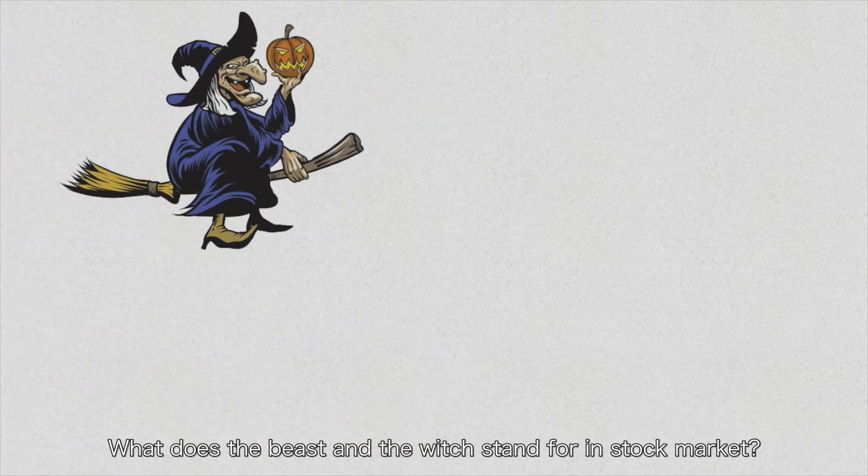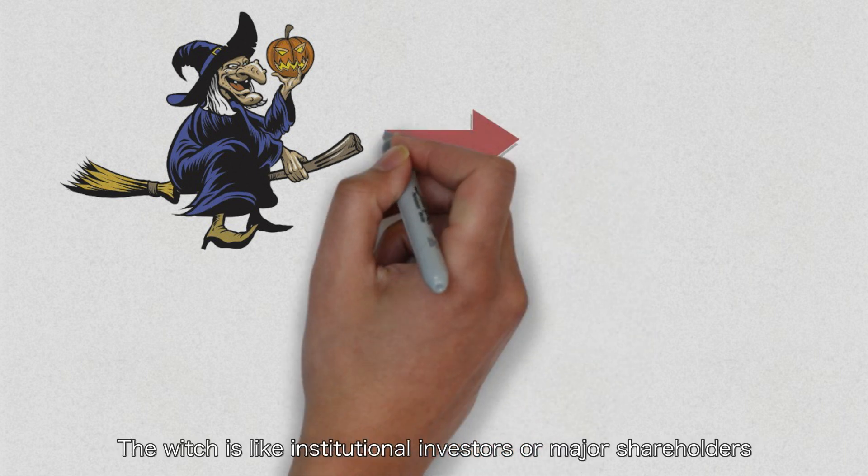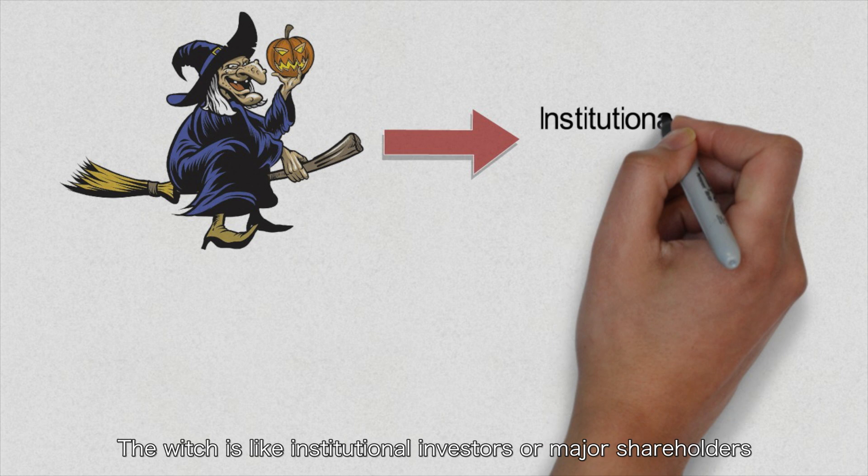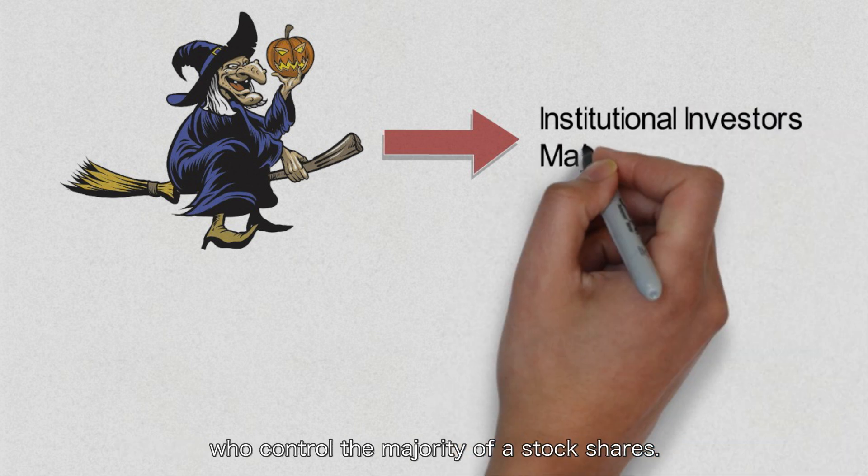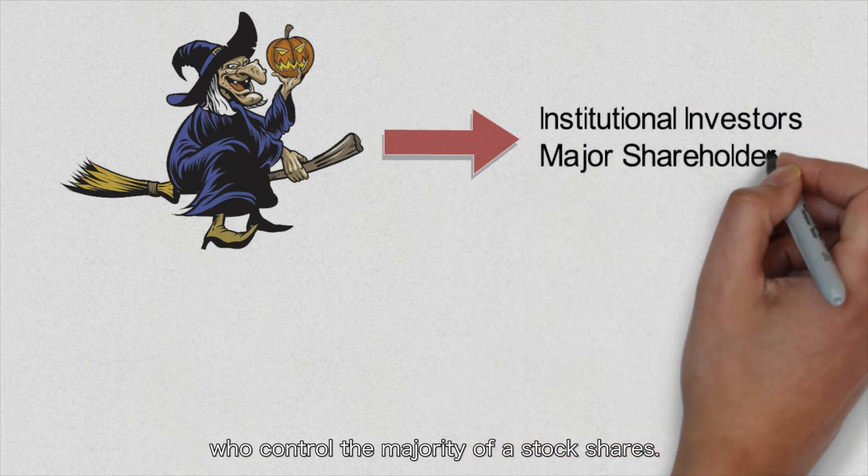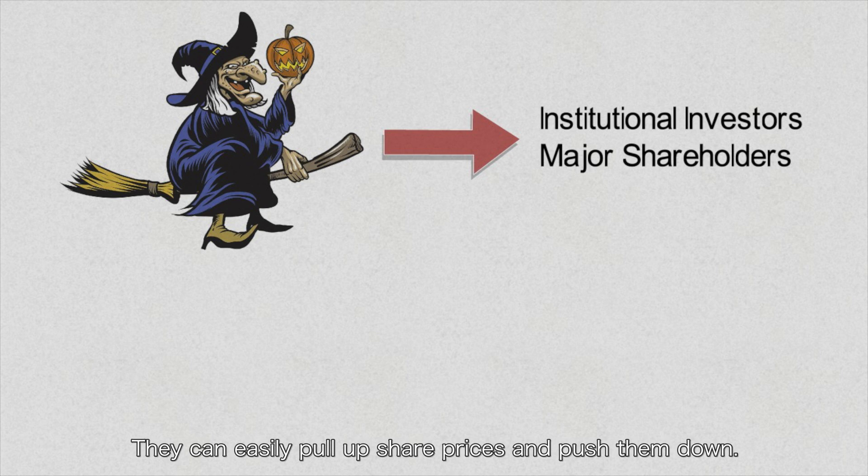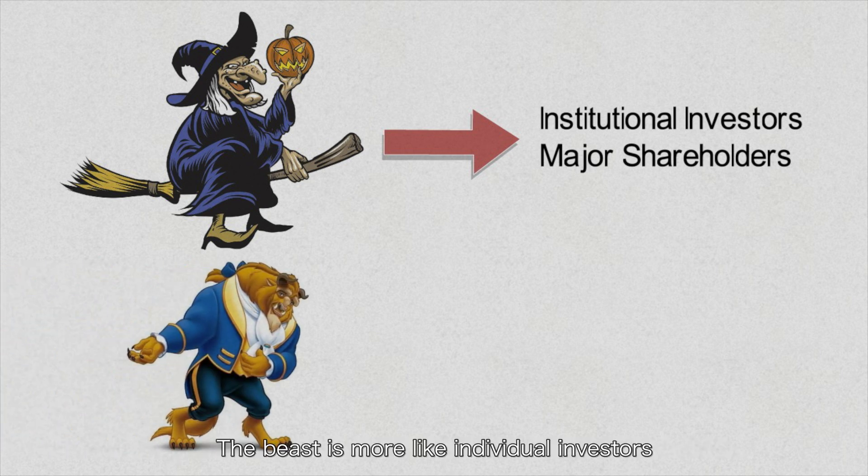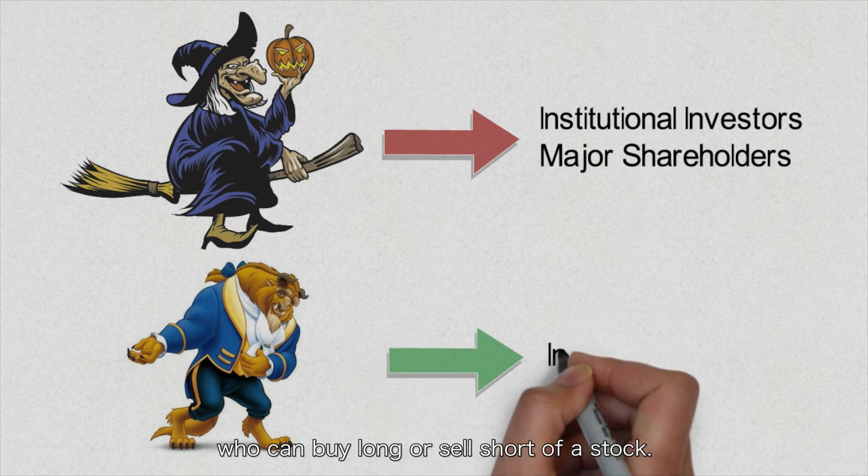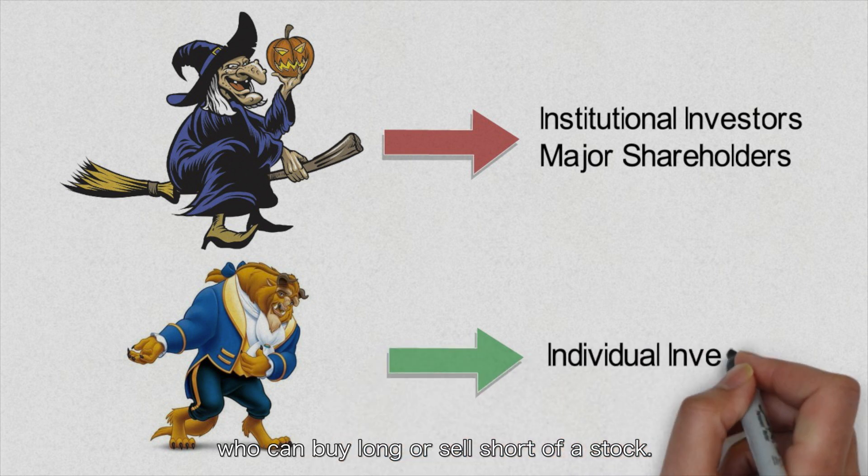What does the beast and witch stand for in the stock market? The witch is like the institutional investors or major shareholders who control the majority of stock shares. They can easily pull up share prices and push them down. The beast is more like individual investors who can buy long or sell short of a stock.